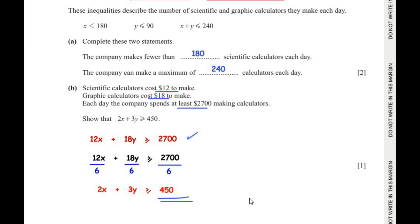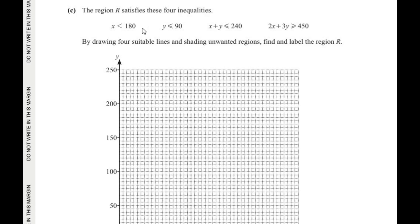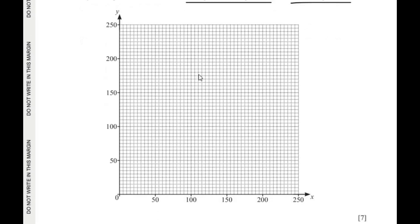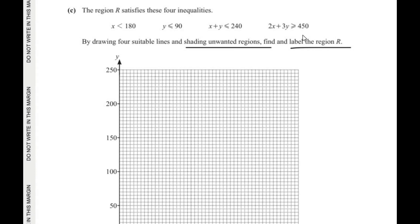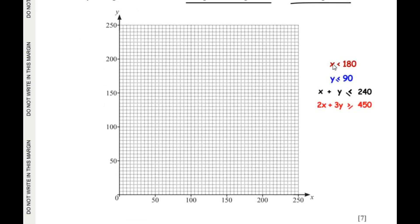The region R satisfies four inequalities. By drawing four suitable lines and shading the unwanted regions, we find and label region R. The four inequalities are given, and a graph has been provided. Starting with the first inequality, x < 180: we locate 180 on the x-axis.